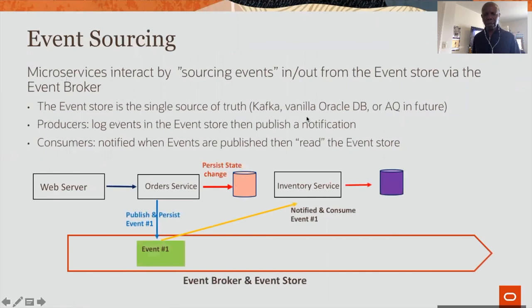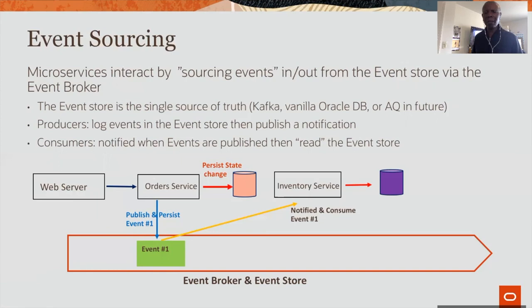Let's look at what event sourcing is. Event sourcing means microservices interact by sourcing events in and out from the event store and they get notified by the service broker. In this example, the order service will receive an order from the front-end, make changes to data, and persist the event into the event store. The event broker will notify interested parties — the inventory service is an interested party, registered to receive notifications, and will get the event from the store. The event store is the source of truth.